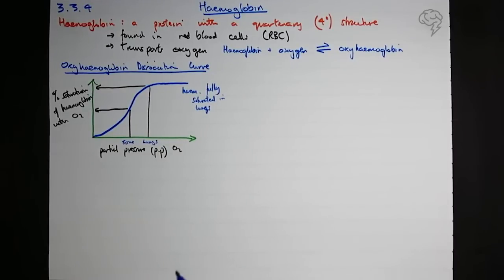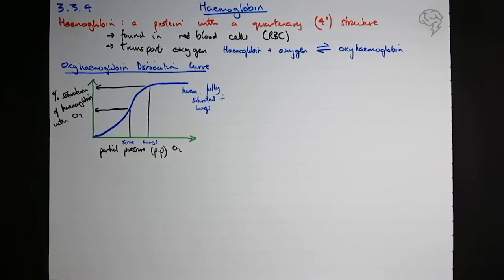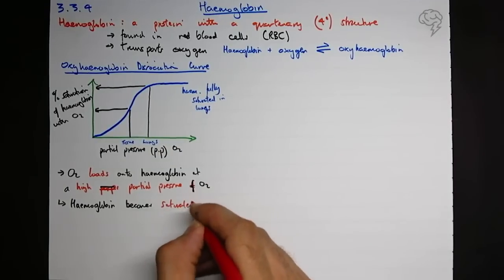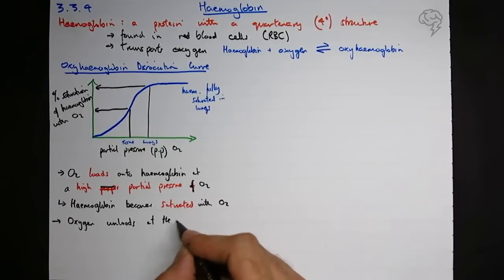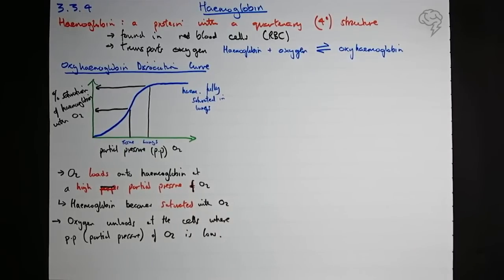We need to use a very specific vocabulary when we're talking about this in the exam to get the marks. So this is going to be the words that we need to use to describe this graph. We're going to say oxygen loads, and loads is a key term, onto hemoglobin at a high partial pressure of O2. We can then say as a result of this, hemoglobin becomes saturated with O2, with oxygen. Next point: oxygen unloads at the cells where the partial pressure of oxygen is low. You can say at the cells, you could say at the tissues. Here I'm going to put PP and I'll put partial pressure in brackets. So these words are very important. If you don't use these words, it's going to be very difficult to get full marks on the exam, which is a shame, but now that you know that, you're going to be fine.